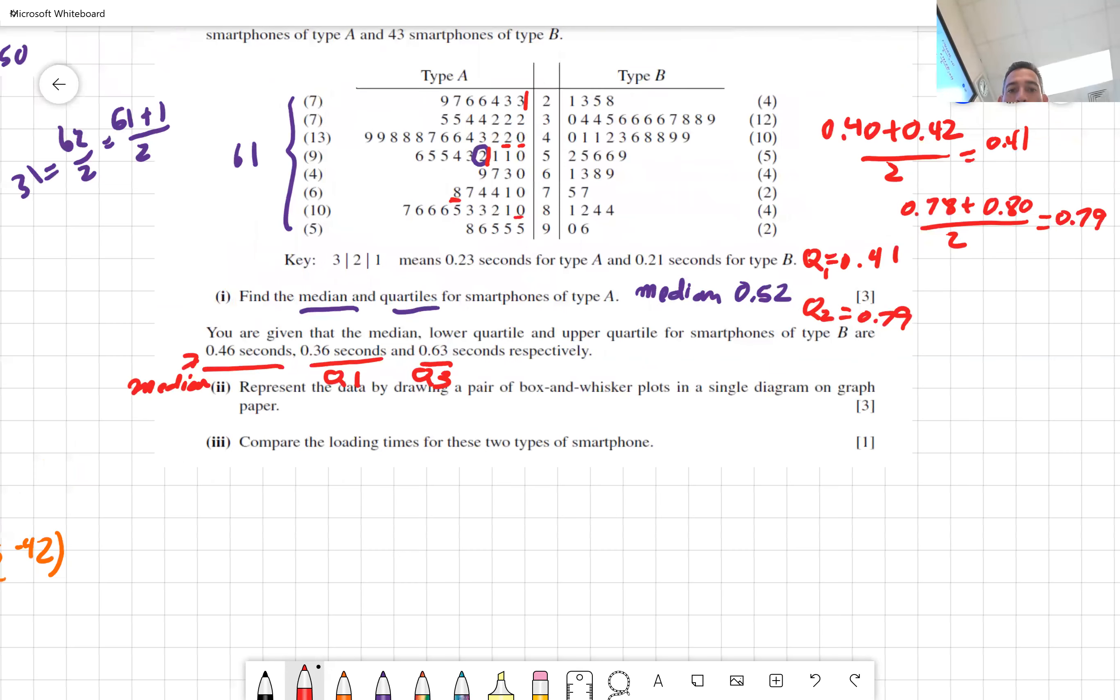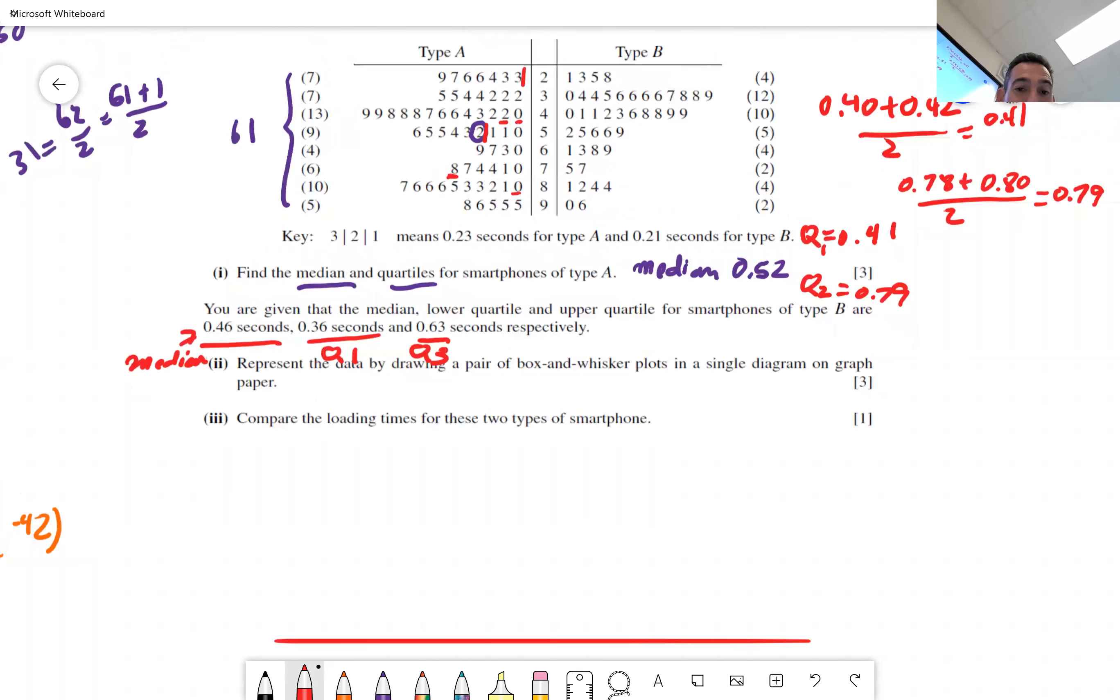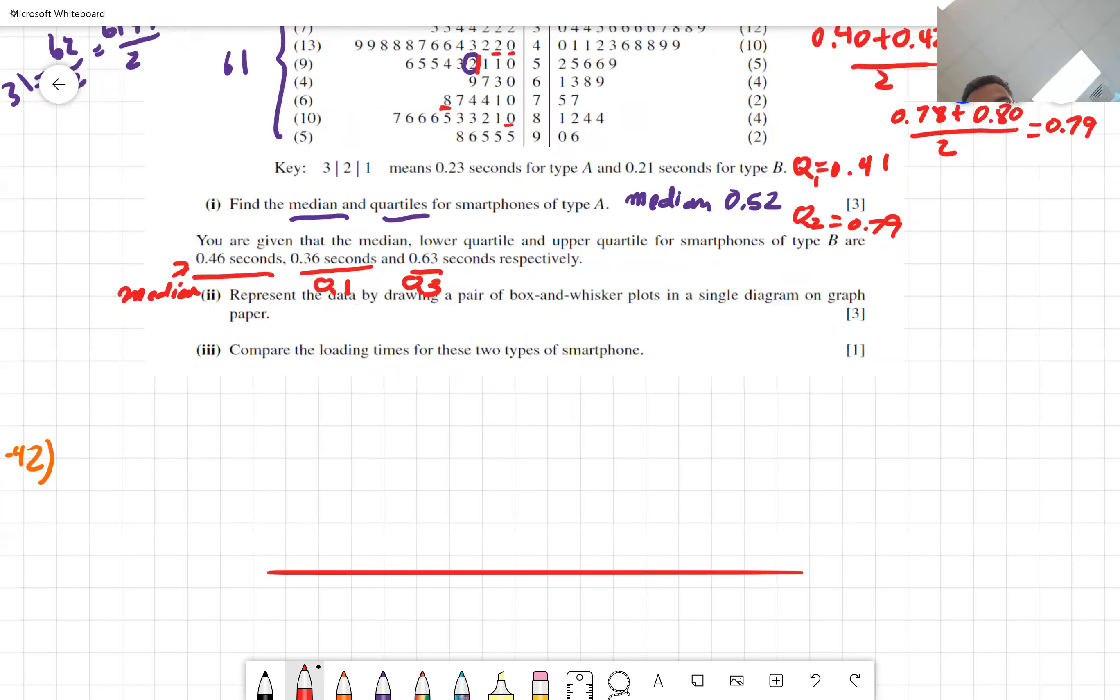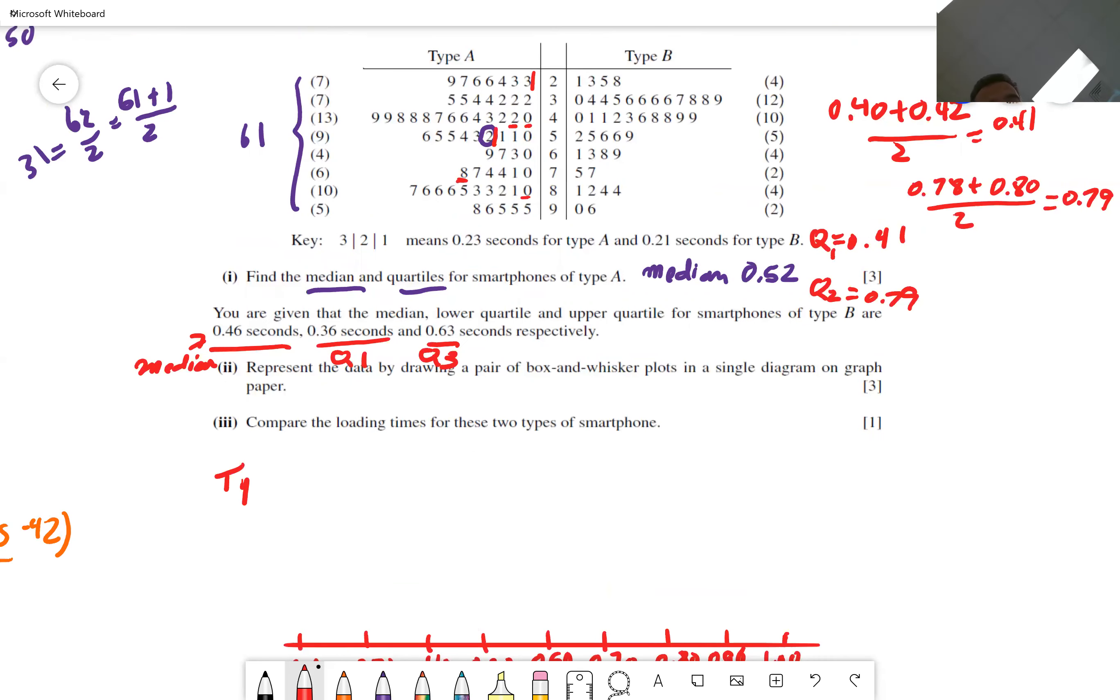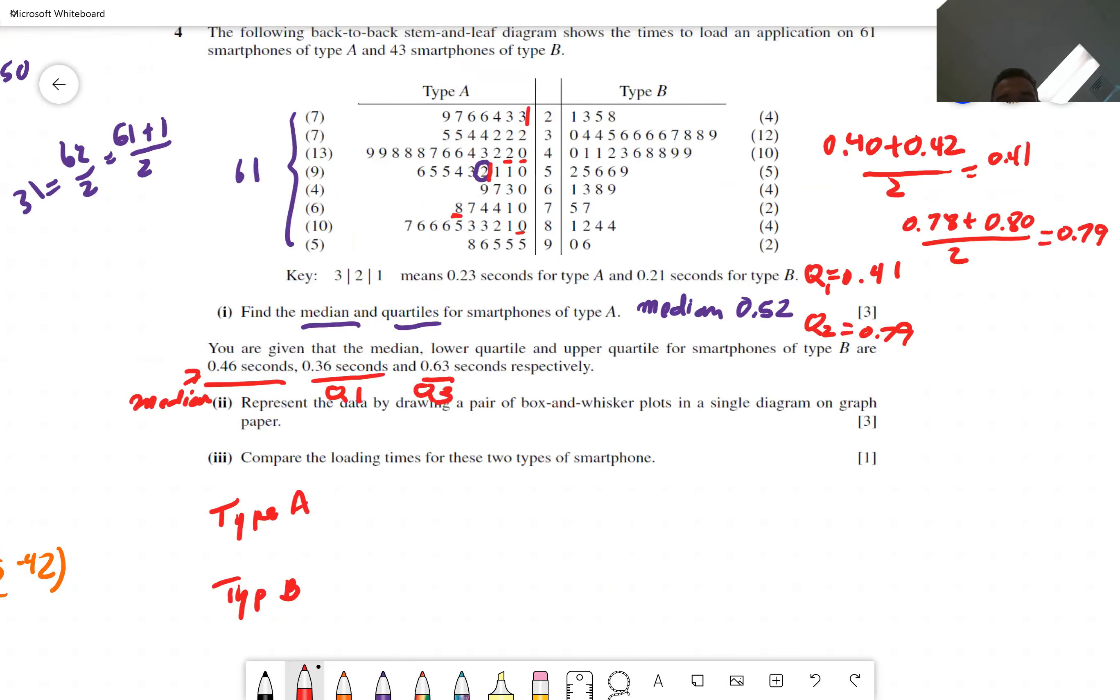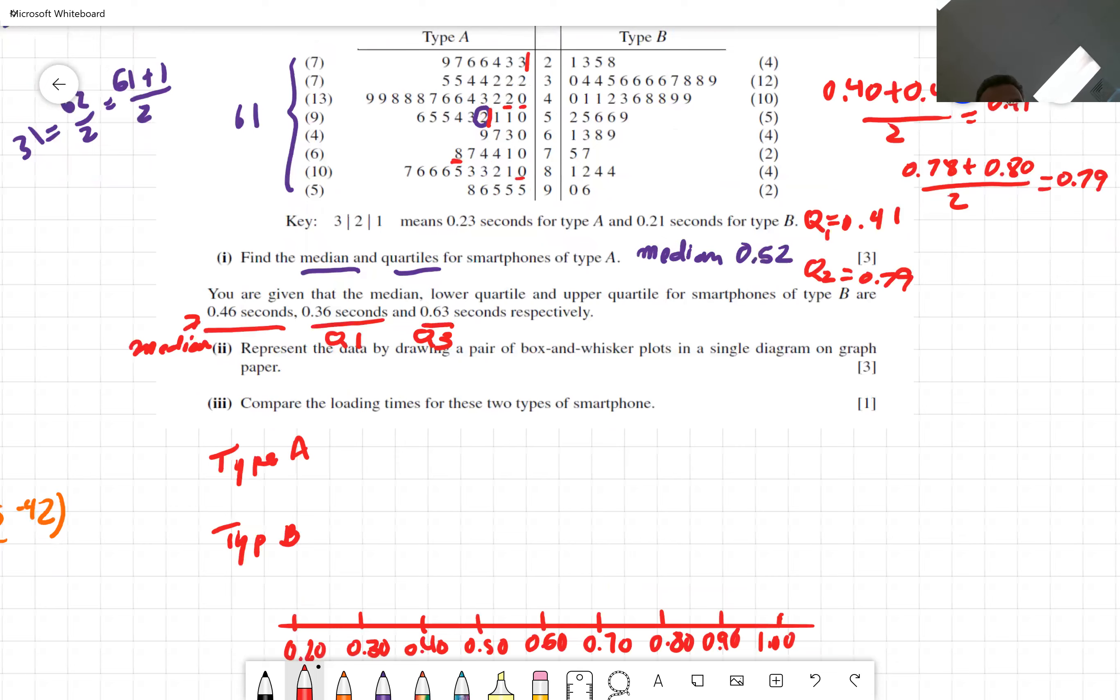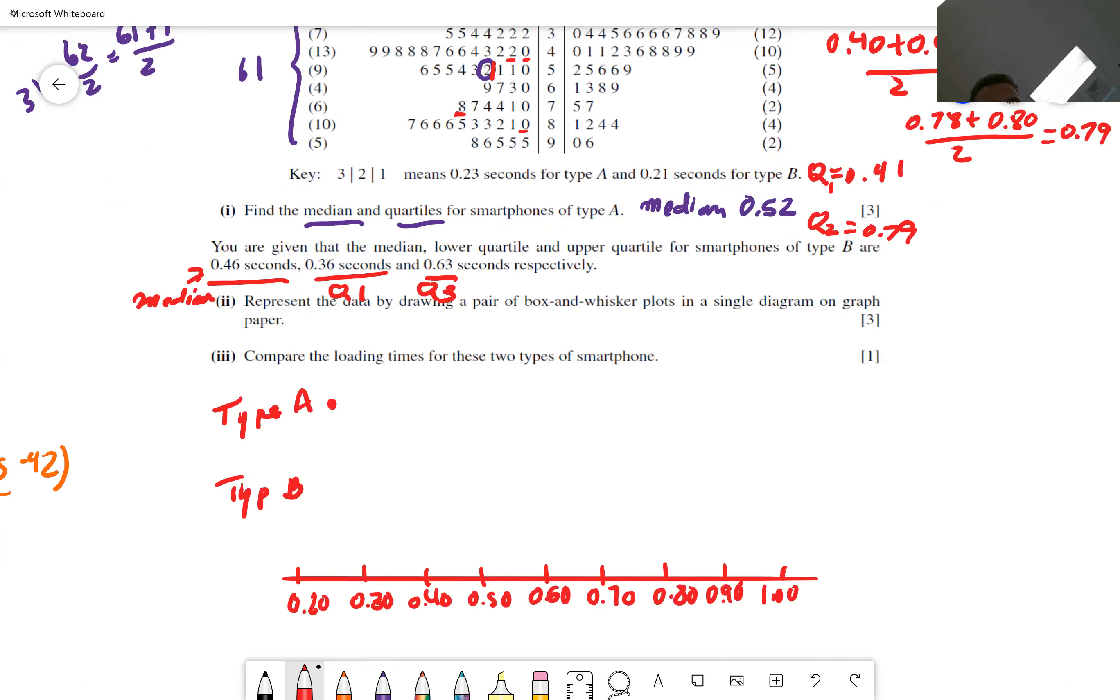So here we go. The first thing you do is you make that number line and you pick a scale. So it ranges from 0.21 to 0.98. So 0.20, 0.30, I'm going to go ahead 0.40, 0.50, 0.60, not too much resolution here, but it's a quick sketch, 0.80, 0.90, 1.0. So we're going to do type A here. We're going to do type B here.